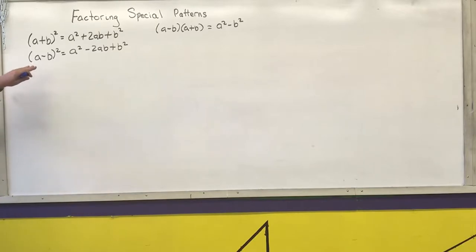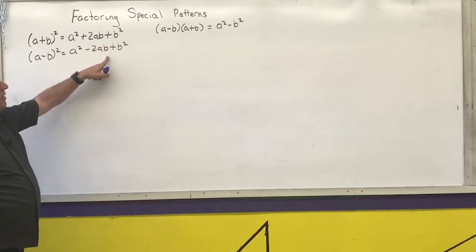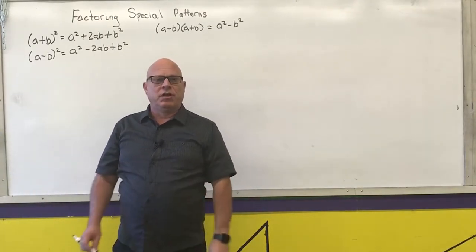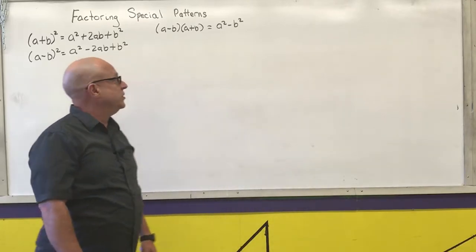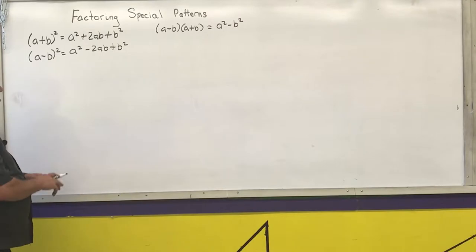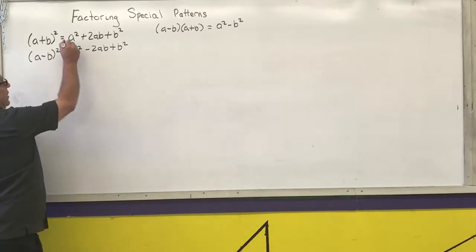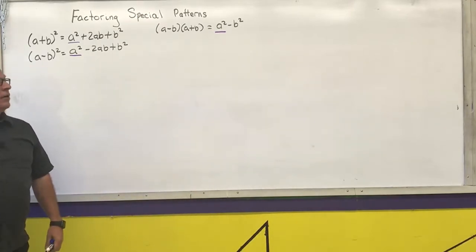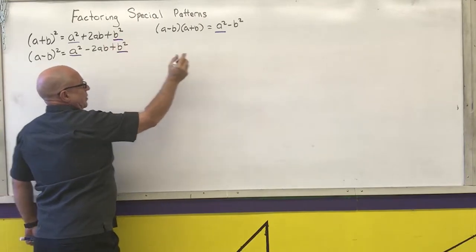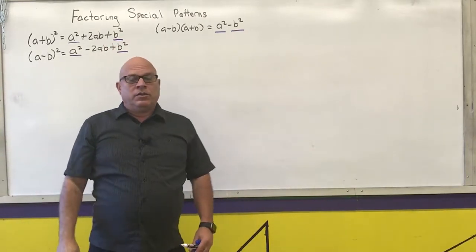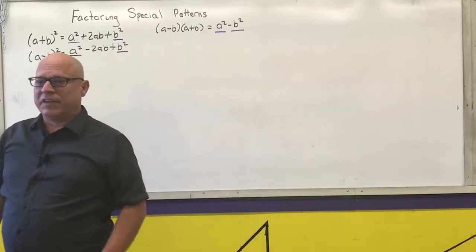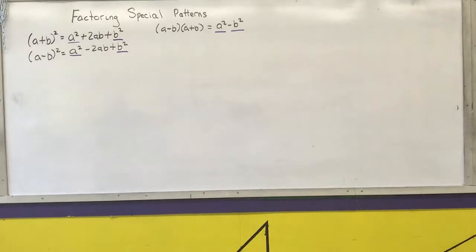We're going to cover how to factor the right-hand side to turn it back into the left-hand side, so that I could use that information to solve a quadratic equation. Notice that in all three of these, the first term has something squared and the last term has something squared. So if the first and last terms are perfect squares, you want to try to look for a special pattern.